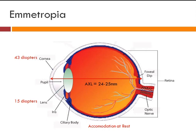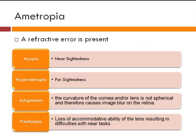Ametropia means that a refractive error is present in the patient. It can be classified into four types. Number one: myopia, also known as near-sightedness — the myopic patient will be able to see things clearly at near. Then comes hypermetropia, which means far-sightedness. This is slightly confusing because in hypermetropia the patient will be able to see far subjects better compared to near objects, but the far vision is also not 100 percent.